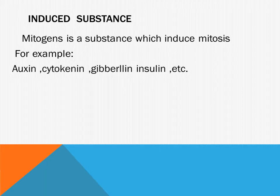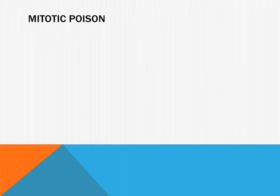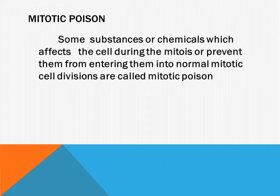Mitotic poison refers to some substances or chemicals which affect mitosis or prevent cells from entering normal mitotic cell division. Unlike mitogens which induce mitosis, mitotic poisons affect or inhibit mitosis. Here we have some examples of mitotic poison.